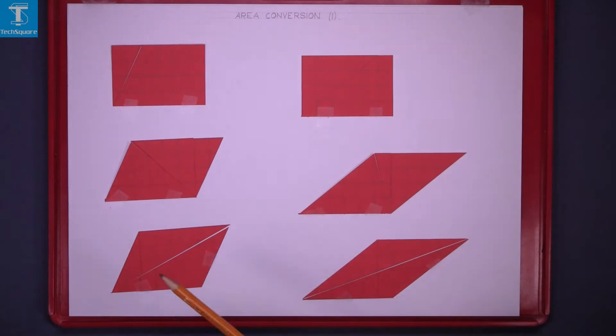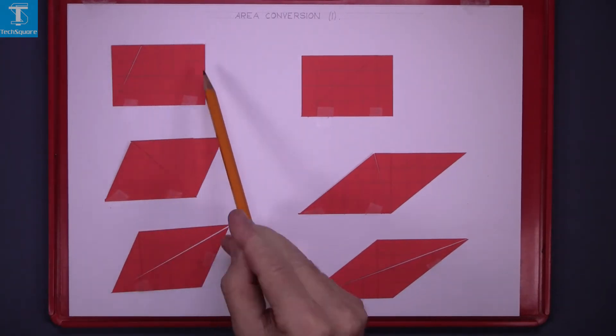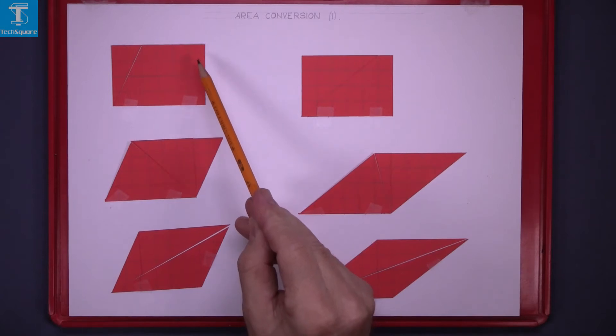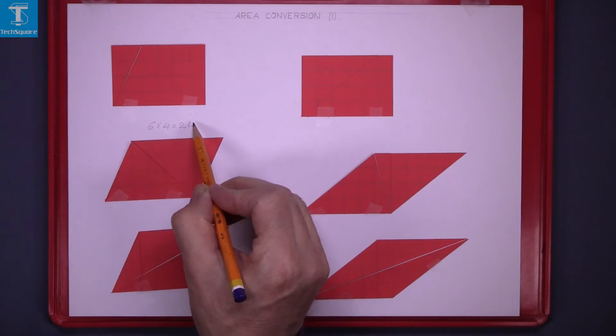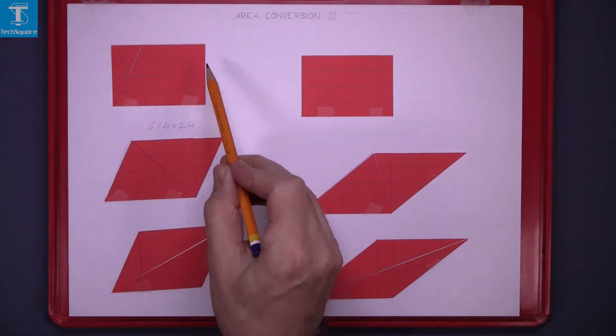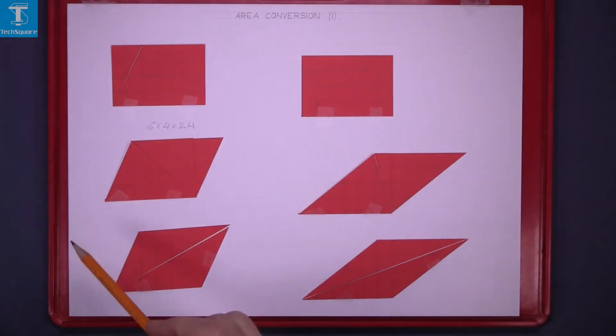Area conversion 1. What we have here is a rectangle 6cm by 4cm high. So the area of that rectangle is 6 × 4 is 24, 24 square centimeters in that figure there.